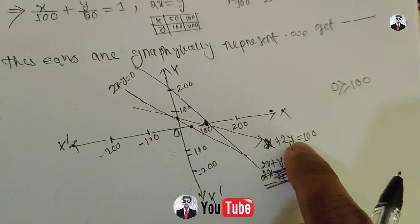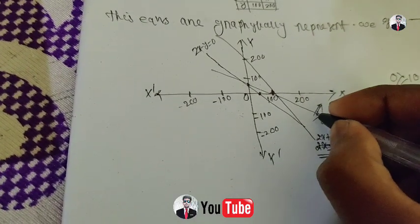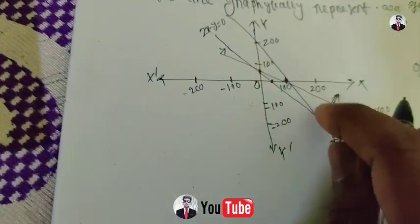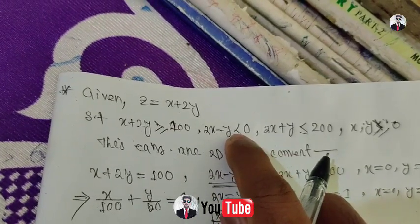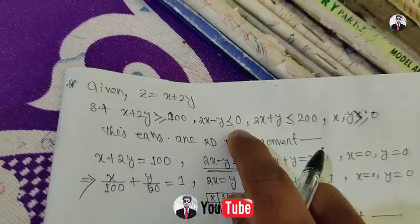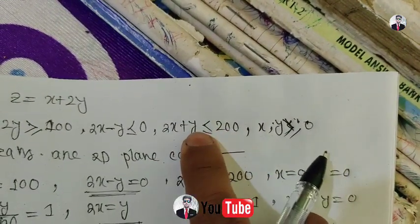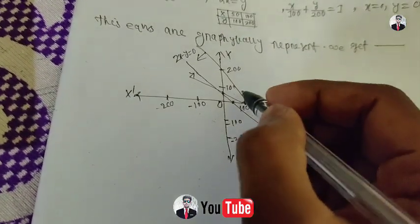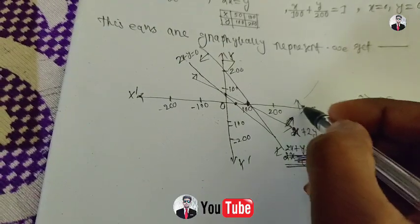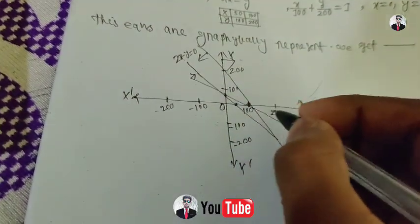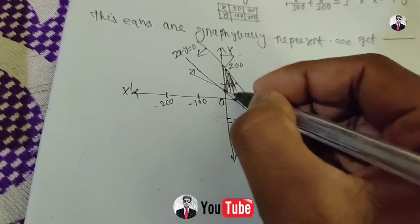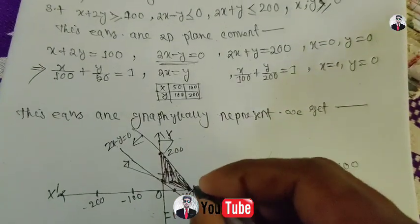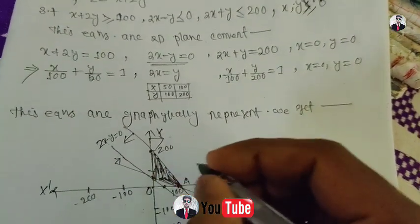For the equation twice x plus y equal to 100, we check the origin side. The constraint is greater than or equal to zero. The origin check: substituting zero into the equations — zero is less than or equal to zero, equal to zero. Checking x equal to zero, y equal to zero, and 2x plus y equal to 200 to determine which region satisfies all constraints.